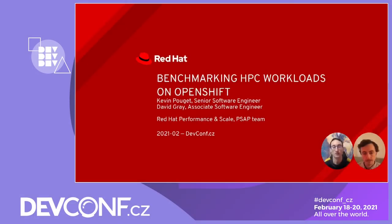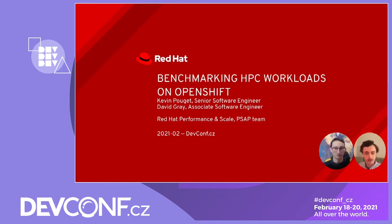Hello, I'm Kevin Pouget. I'm a Senior Software Engineer in Red Hat's Performance and Scale department, in the team in charge of accommodating performance and latency-sensible applications on the OpenShift platform. Hi, I'm David Gray, an Associate Software Engineer at Red Hat in the same team as Kevin.